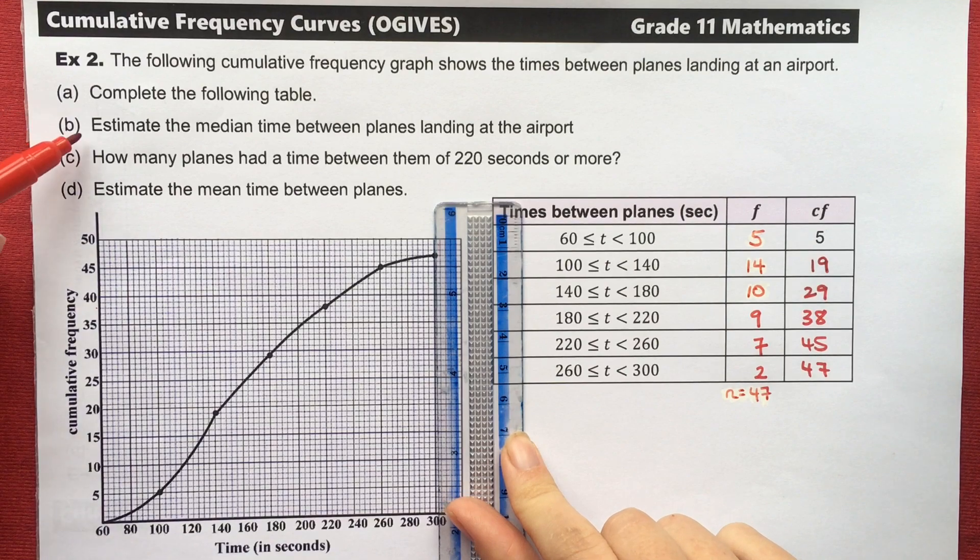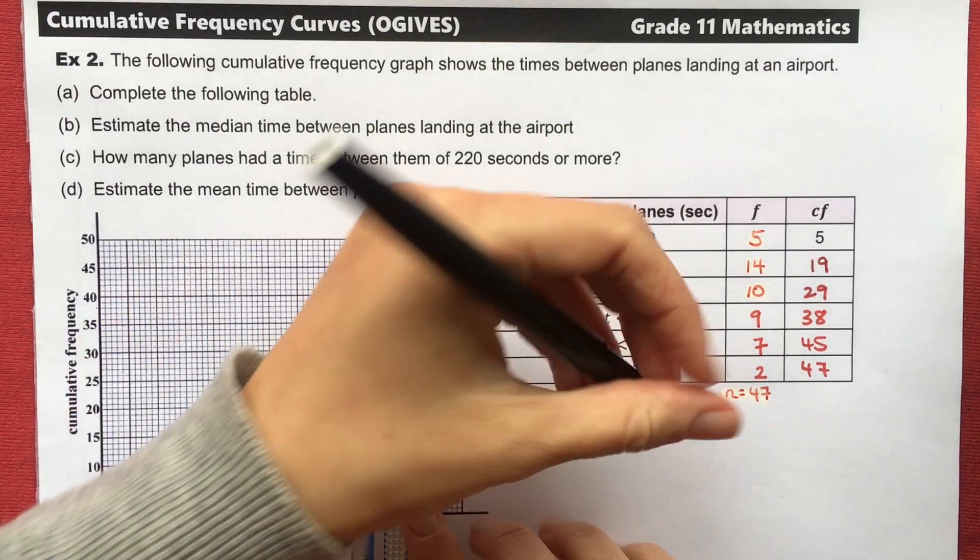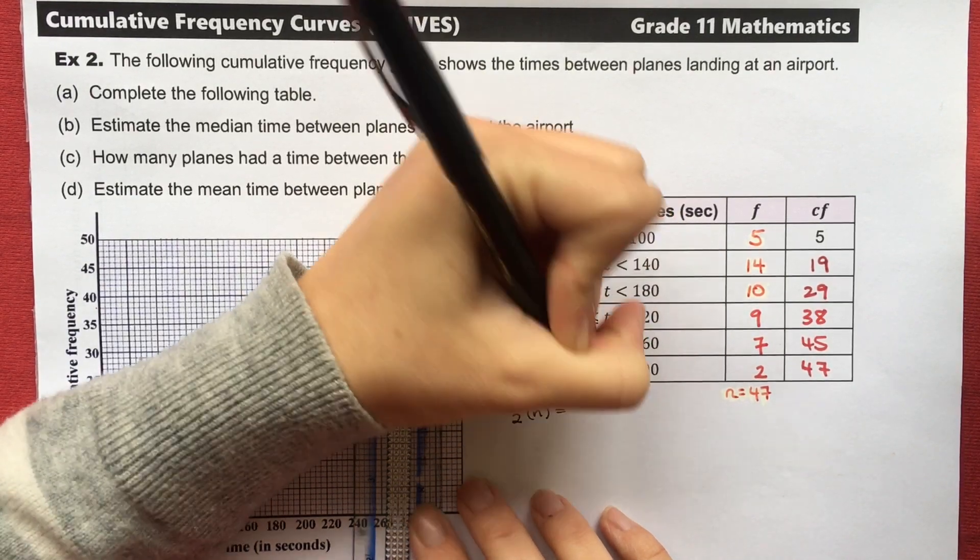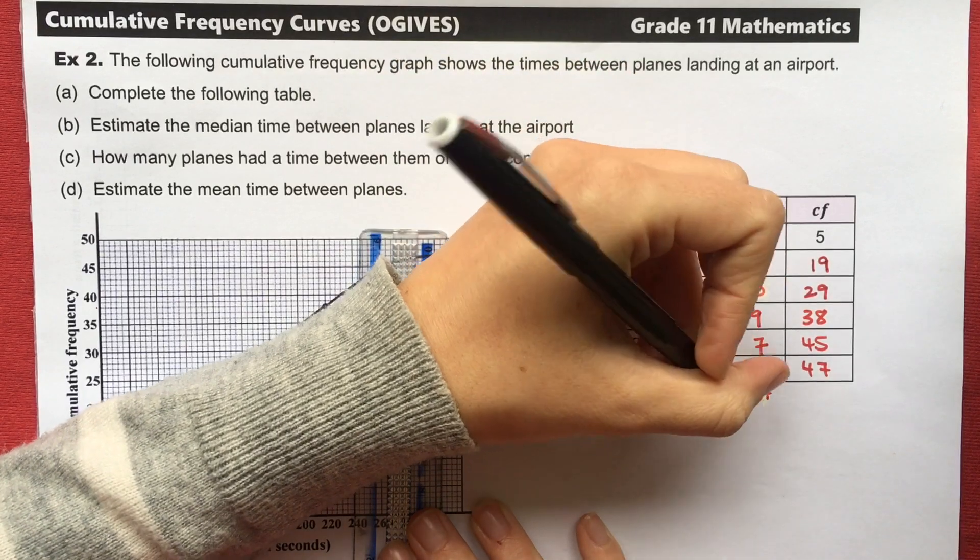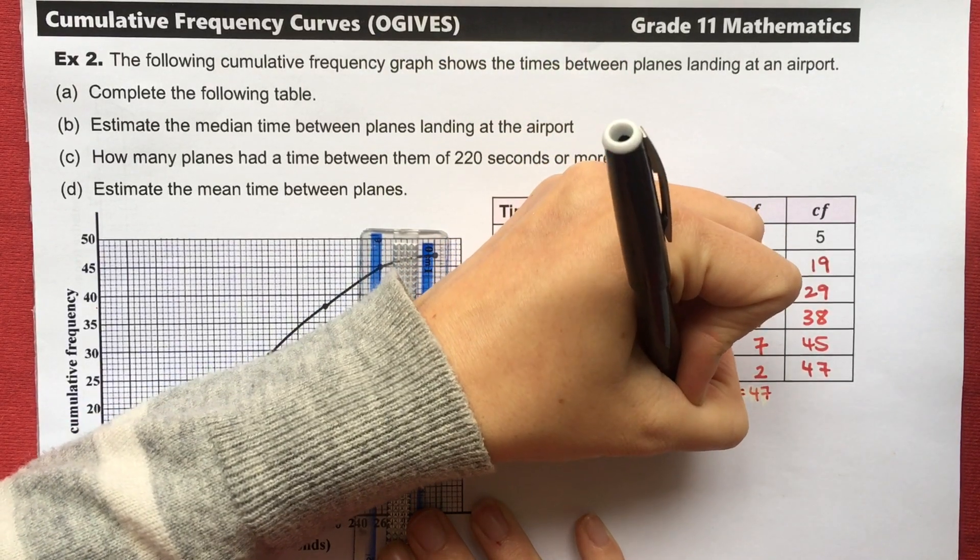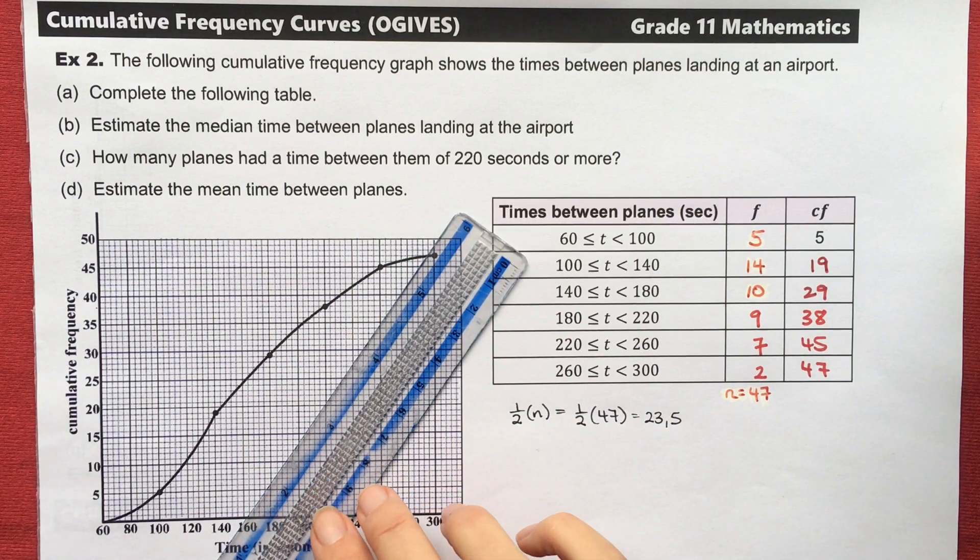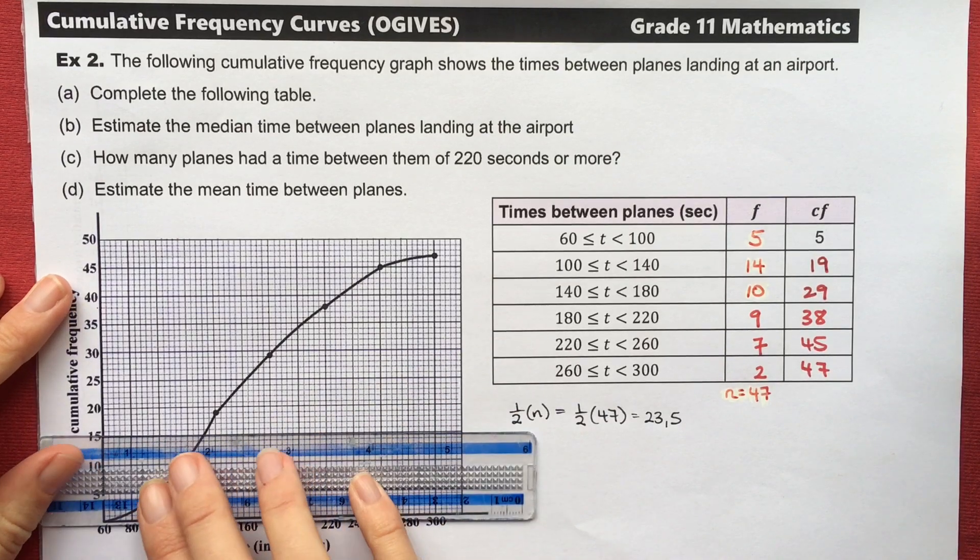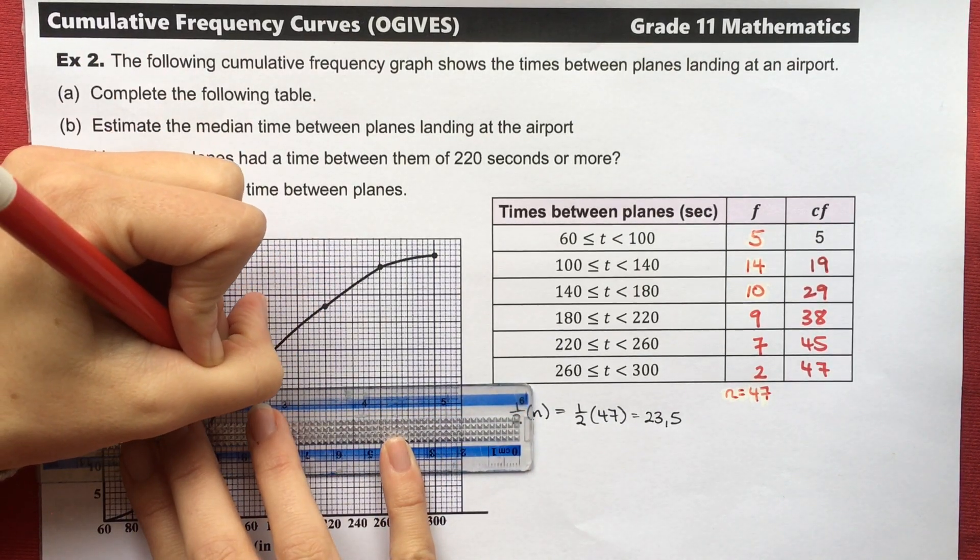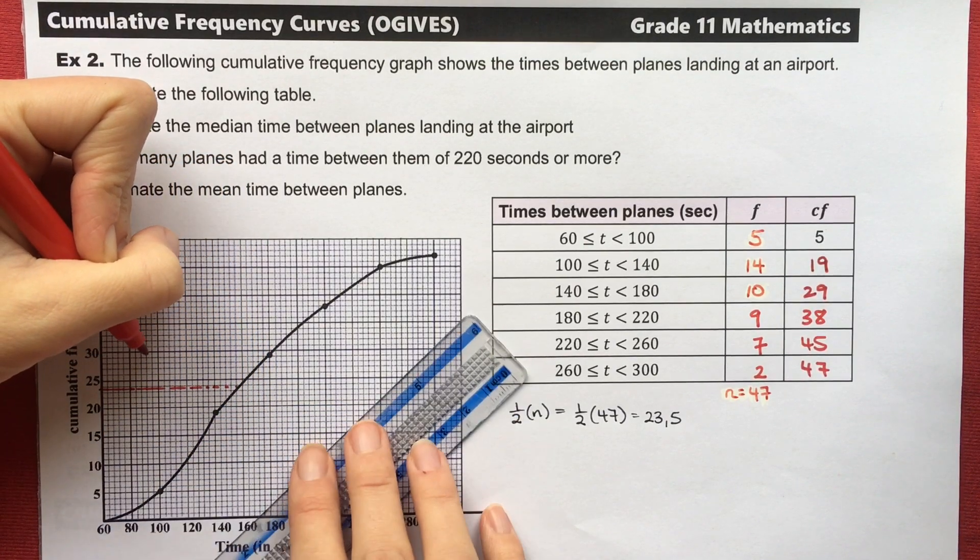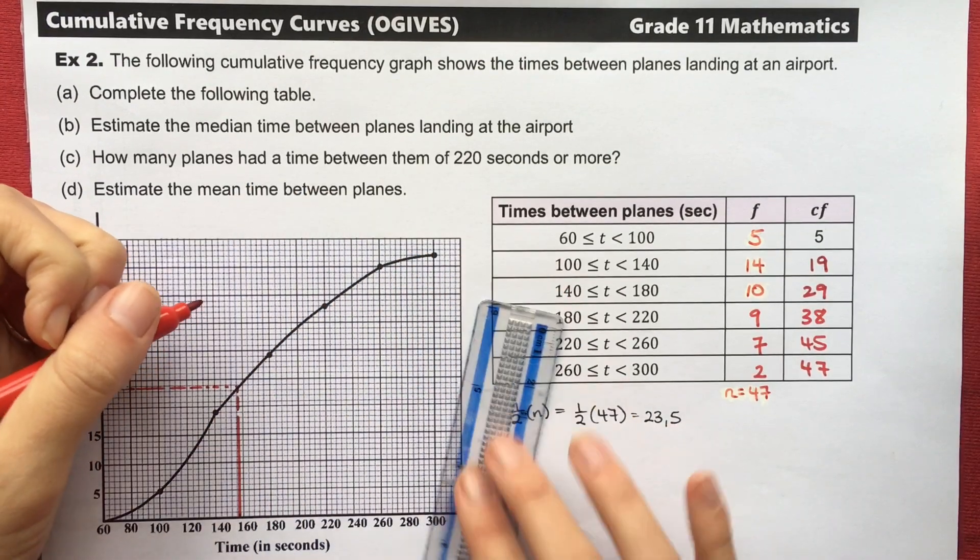Now estimating the median, we're going to estimate the median again by taking half of the data values. So 1 half times n. In this case, n is 47. 47 planes have landed. So 1 half of 47, which is 23.5. So that means that my median lies between the 23rd and the 24th positions. So you're going to use a better marker than this. You're going to use a pencil. But let's do this. So 1, 2, 3 and a half. Draw your line there. So that's 23 and a half.